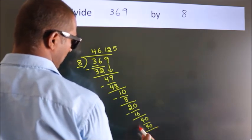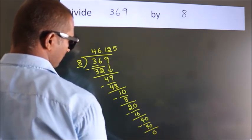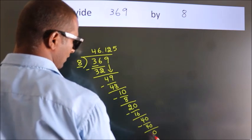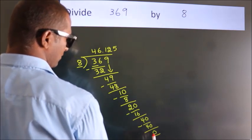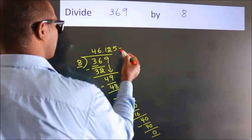Now we subtract. We get 0. Here we got remainder 0, so this is our quotient.